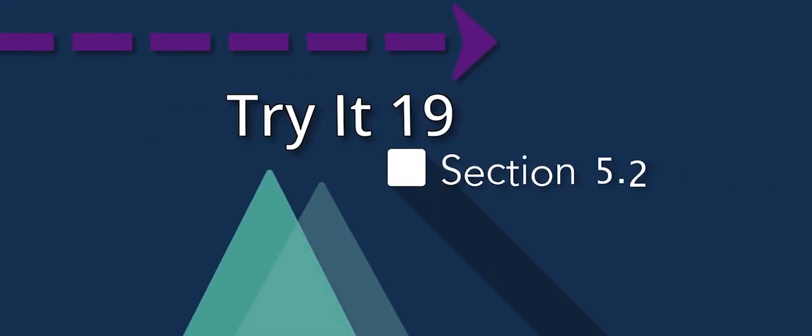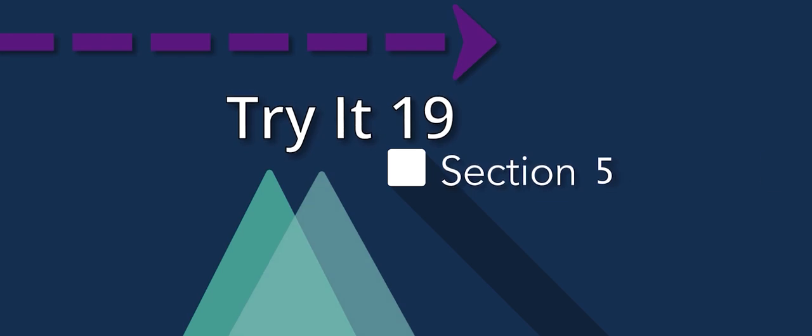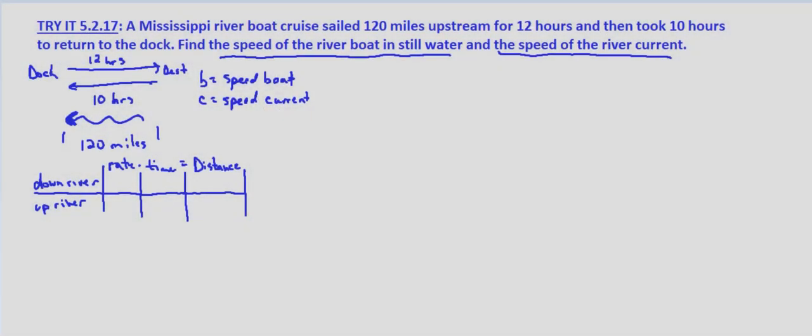In this problem we're looking at somewhat of a classic scenario of uniform motion, a boat traveling up and downstream. We're told that a Mississippi riverboat cruise sailed 120 miles upstream for 12 hours and then took 10 hours to return to the dock.